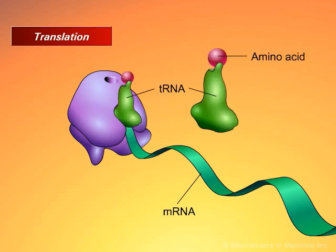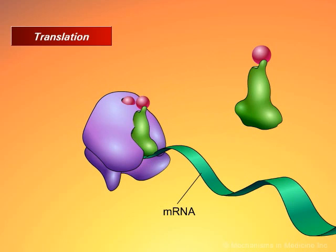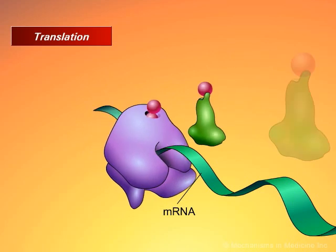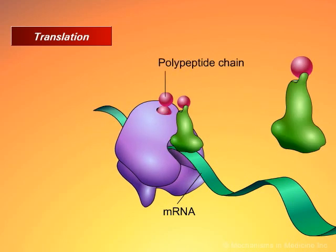This step involves the aligning of transfer RNA (tRNA) molecules in sequence along the mRNA. Each tRNA carries a unique amino acid determined by the sequence of the tRNA, which, when aligned along the mRNA and ribosome, join together to form the polypeptide chain. This step is known as translation.